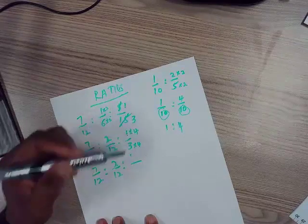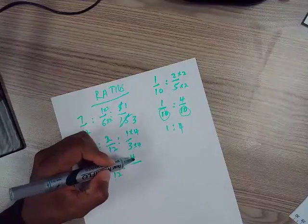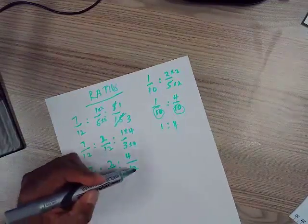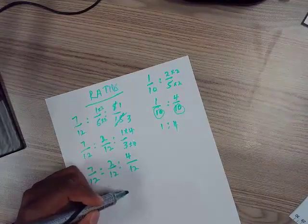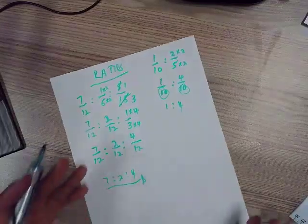Times four on top, you also do it at the bottom. So you will have four over twelve. Now you got rid of that. So you can go seven is to two is to four. You need to simplify further from this? No, that's your answer.